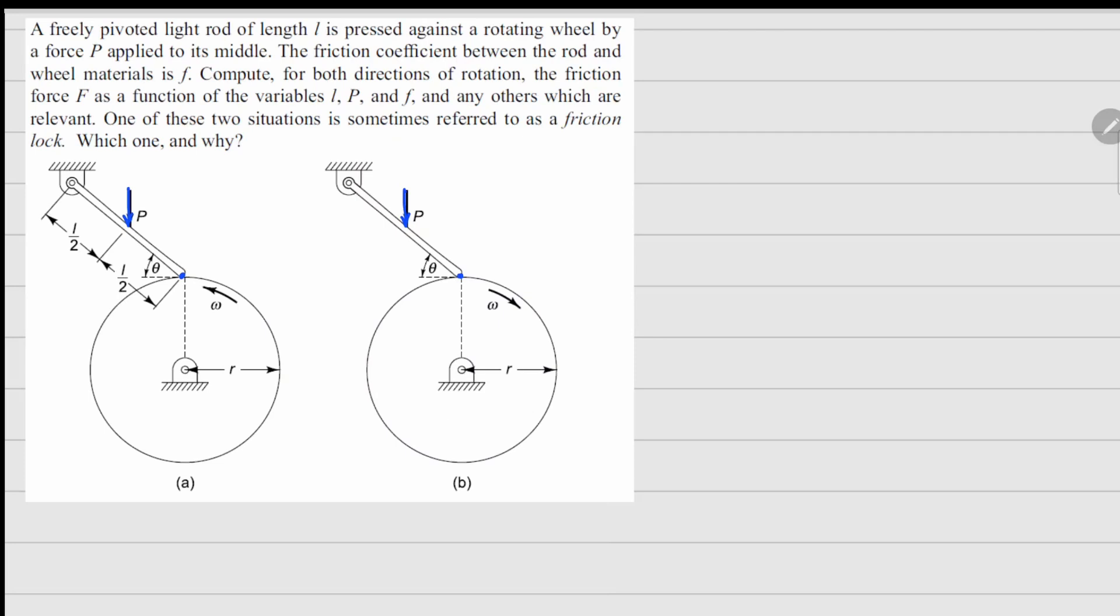In one case, the wheel is rotating clockwise, and the other case, the wheel is rotating counterclockwise. This point right here in both cases is pivoted, so it is free to rotate, but it will not be allowed to move in x and y direction.